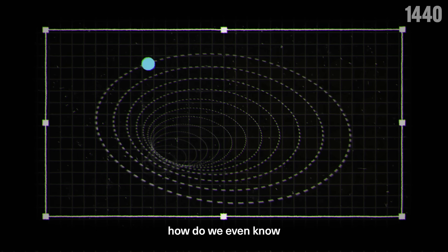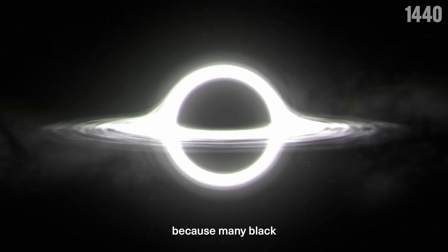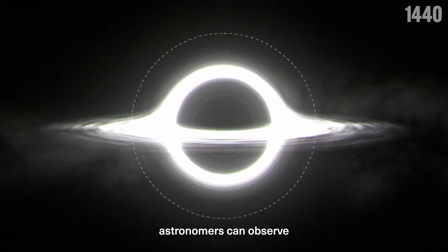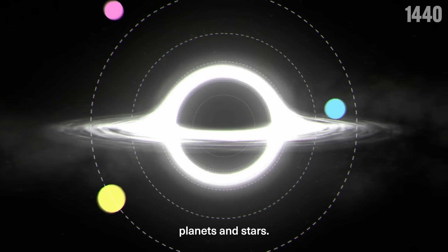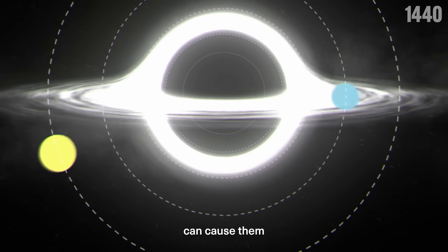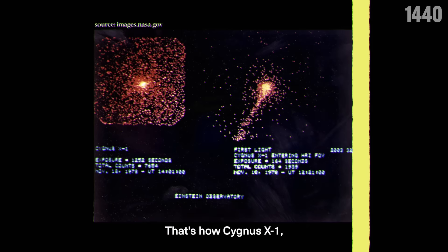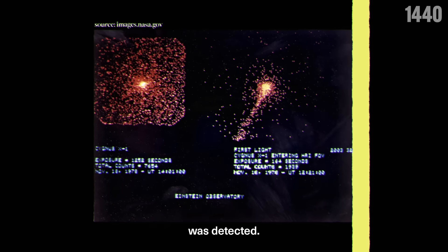If light can't escape a black hole, how do we even know that they are there? A couple of ways. First, because many black holes are so large, astronomers can observe their pull on nearby planets and stars. If objects get too close to a black hole, the gravitational pull can cause them to superheat and emit x-rays. That's how Cygnus X-1, the first ever black hole confirmed, was detected.